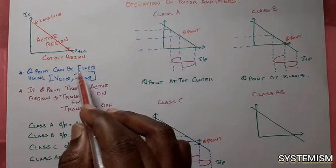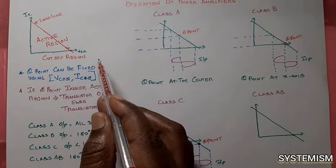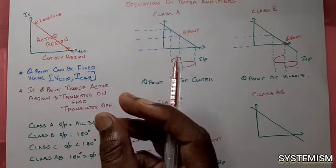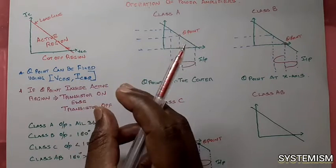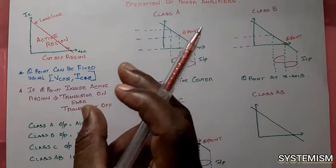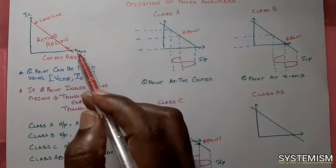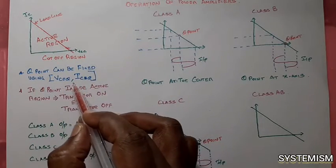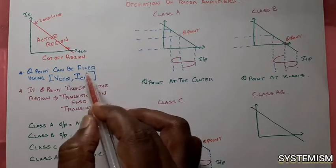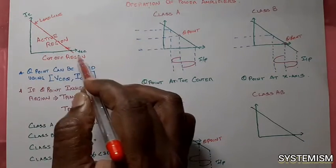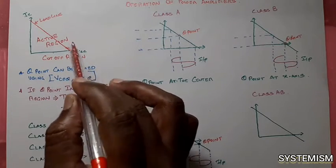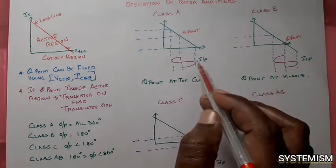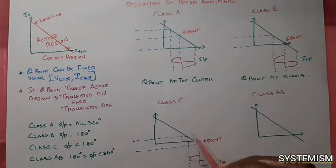We have to fix the transistor's Q point. How do we fix it? Normally, you know VCEQ and ICQ. We are providing a battery — biasing — to the transistor. According to the battery's voltage and current, you can fix the transistor at any point on this load line. By means of VCEQ and ICQ, by means of the battery voltage and current, you can fix the transistor anywhere on this load line. From this idea, we will understand the operation of class A, class B, class C, and class AB.